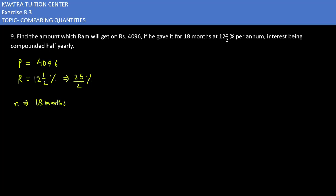Years conversion: 18 by 12. This has been converted into year. Now we have to half the interest rate. Divide this by 2, so you get 25/4%. This is our rate.